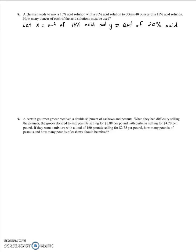Now we need to write our two equations. We know the total amount of acid is going to be 40 ounces. So that means however much of X plus however much of Y has to equal 20 ounces. Now, the amount of acid in each solution depends on the percentage of acid in the solution. So the amount of acid in the 10% solution is 0.10 times X plus the amount of acid in the 20% acid solution is 0.20 times Y.